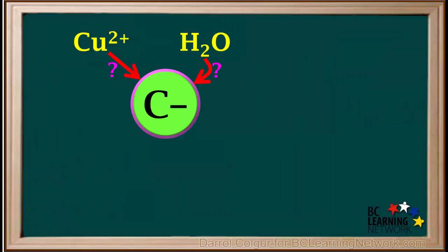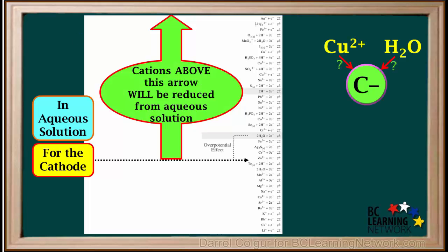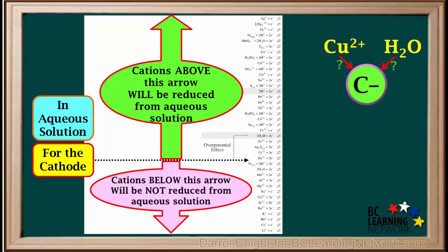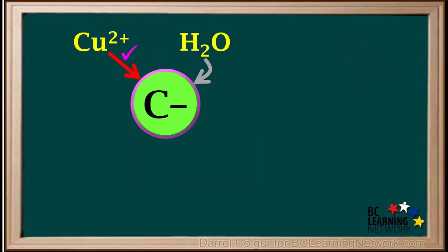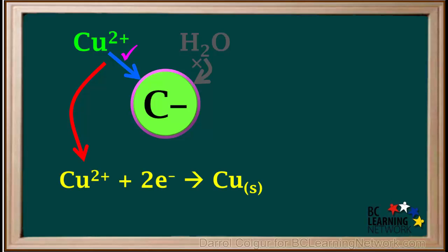Using this diagram, we'll ask whether copper 2+ or water is reduced at the cathode. Remember, at the cathode, any cations above the overpotential arrow will be reduced from aqueous solution, even if water is present. And any cations below this overpotential arrow will not be reduced from aqueous solution. We see that copper 2+ ions are higher than the overpotential arrow for the reduction of water, so copper 2+ ions will be reduced at the cathode. The half reaction occurring at the cathode of this cell is: Cu2+ + 2e⁻ → Cu(s).